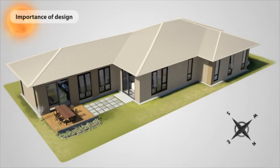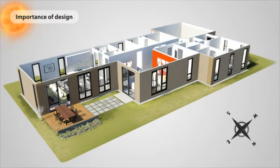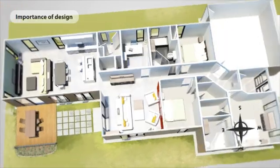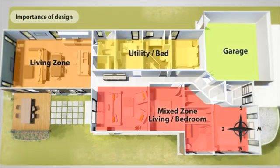Maximise the sun to living areas by putting them on the north side. It is best to face the utility rooms to the south. This will reduce the need to heat these rooms in winter and provide more natural light. You can see here how to divide your home up into zones to make best use of solar passive design.